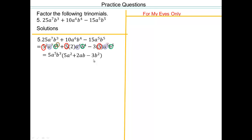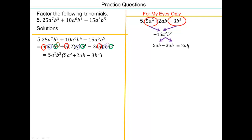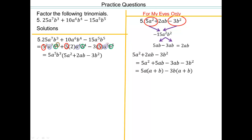Once you have that, now we can use the AC method. So 5 a squared times negative 3 b squared gives me negative 15 a squared b squared. Two numbers that multiply to give negative 15 and add to give 2ab — that's 5ab and 3ab, because the difference gives me 2. So let's rewrite it and factor by grouping. Between the first two terms, pull out a 5 and an a, and you'll have a plus b left. Then negative 3b times a plus b gives the remaining terms. So the final answer is 5a minus 3b times a plus b.